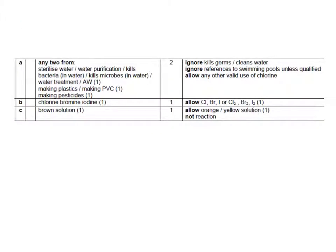The answers: uses of chlorine include sterilises water, water purification, kills bacteria in water, killing microbes in water, water treatment, or alternative wording. Making plastics or making PVC, and making pesticides — those are the three on the specification. Note: ignore references to swimming pools unless qualified. The reactivity order is chlorine, then bromine, then iodine. The displacement reaction gives a brown solution of iodine.